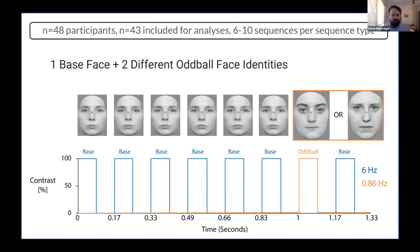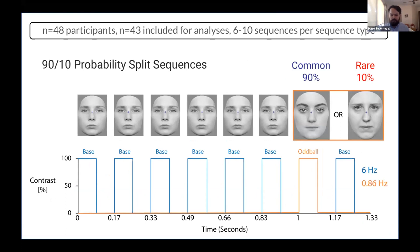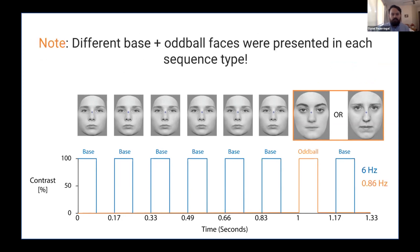So in the experiment we ran, we had a base face and two different oddball identities from the base face. And we manipulated the probability with which each face could appear. So we had a common and rare, so a 90-10 split, 80-20 splits, 70-30, 60-40, and an equal 50-50 split condition. And these were presented of course in different stimulation sequences. And one important thing is that we use different base and oddball faces for each sequence type so that we didn't get carryover of expectations that were linked to these specific images.